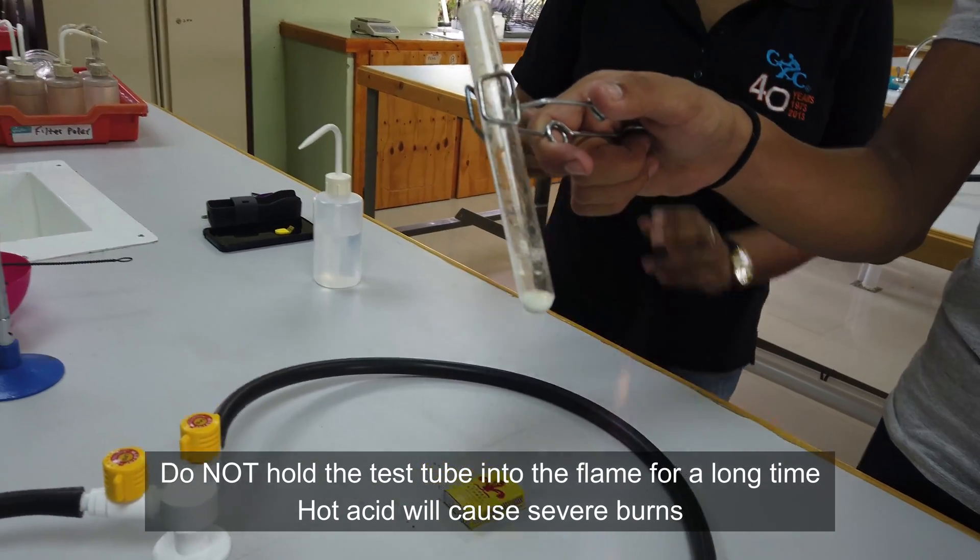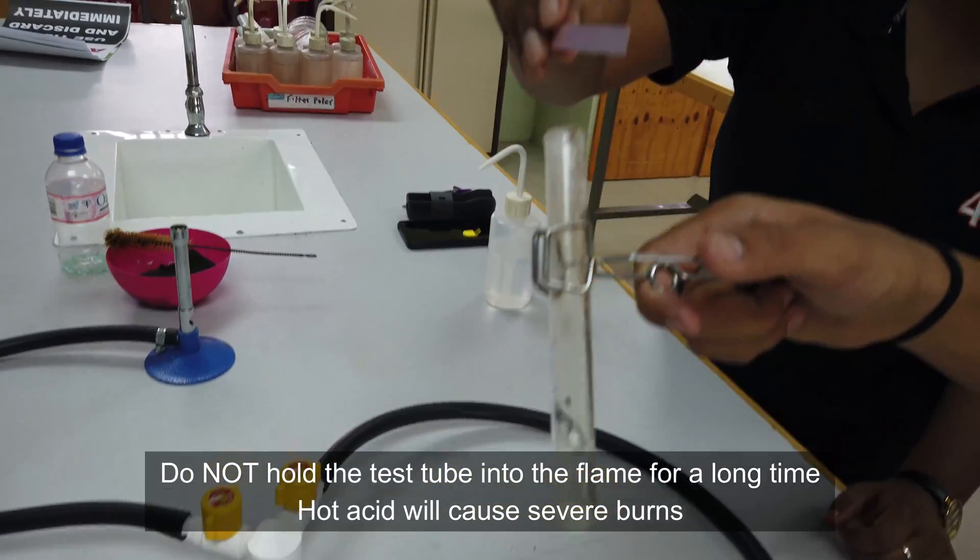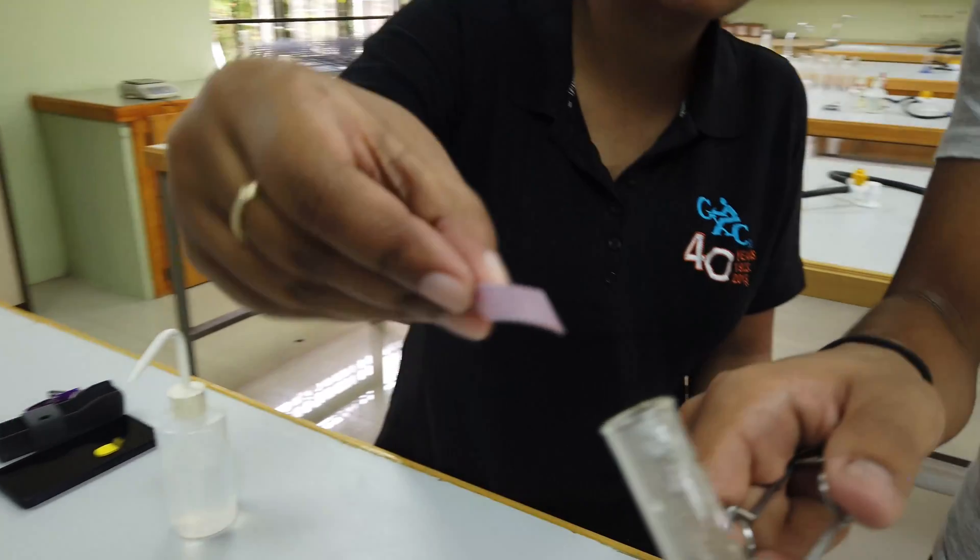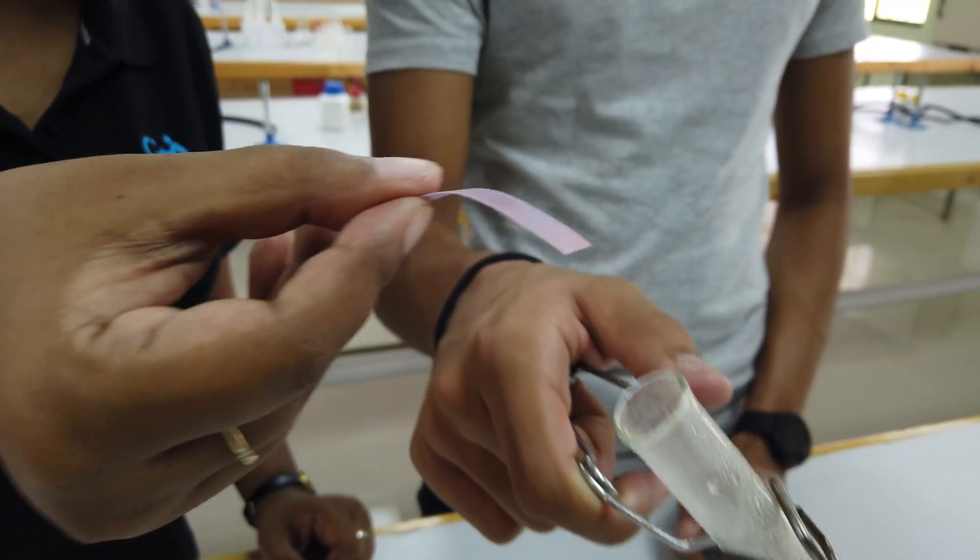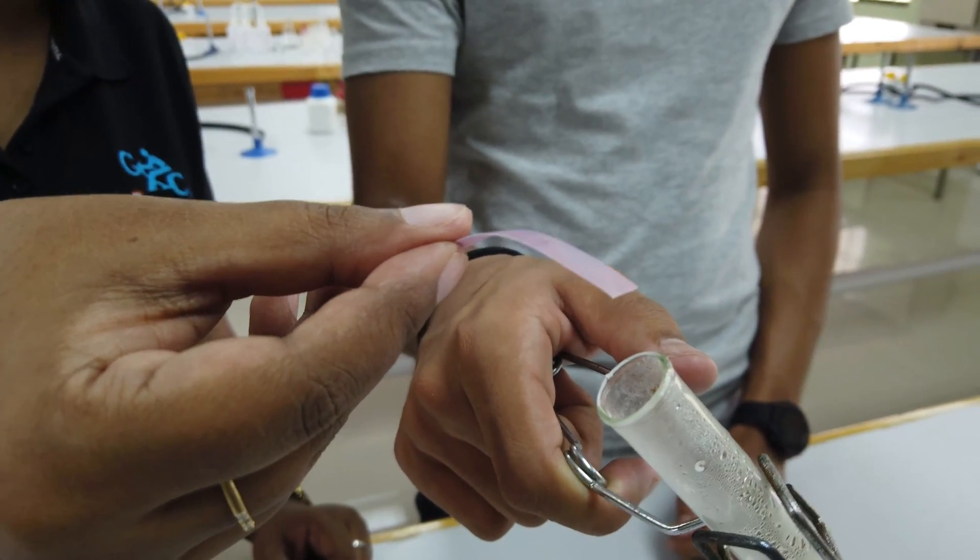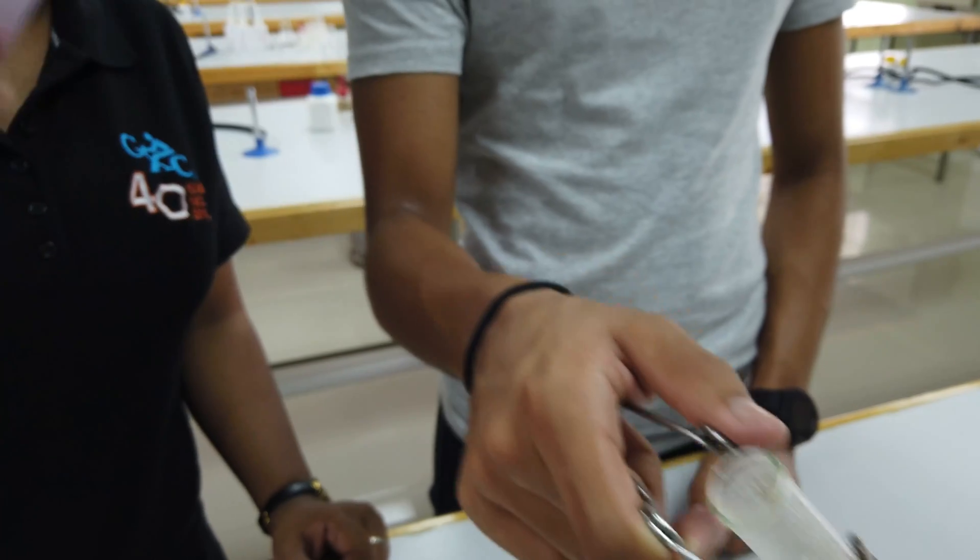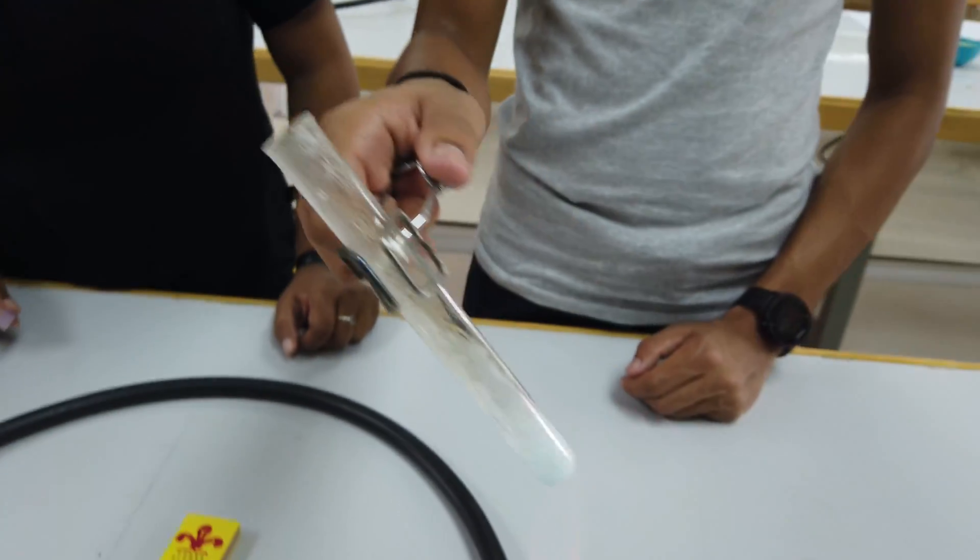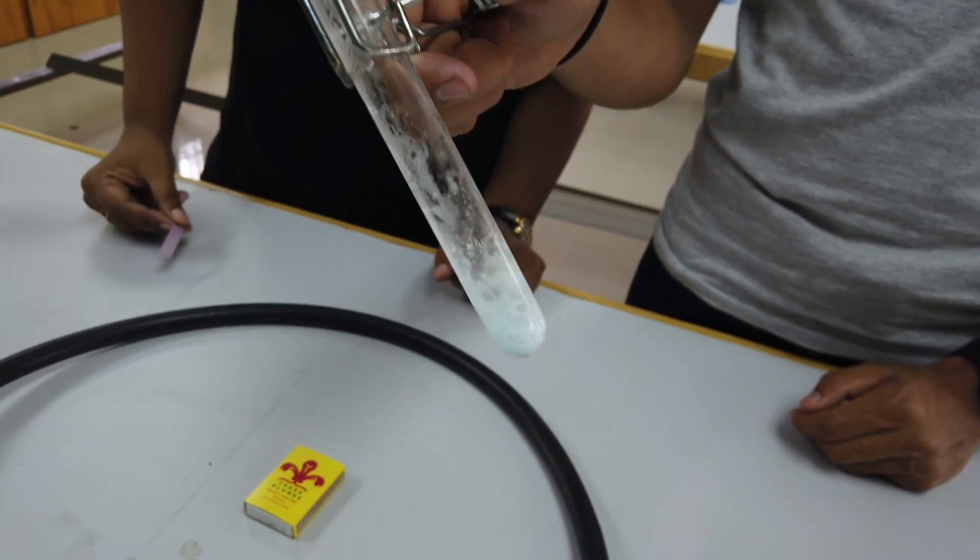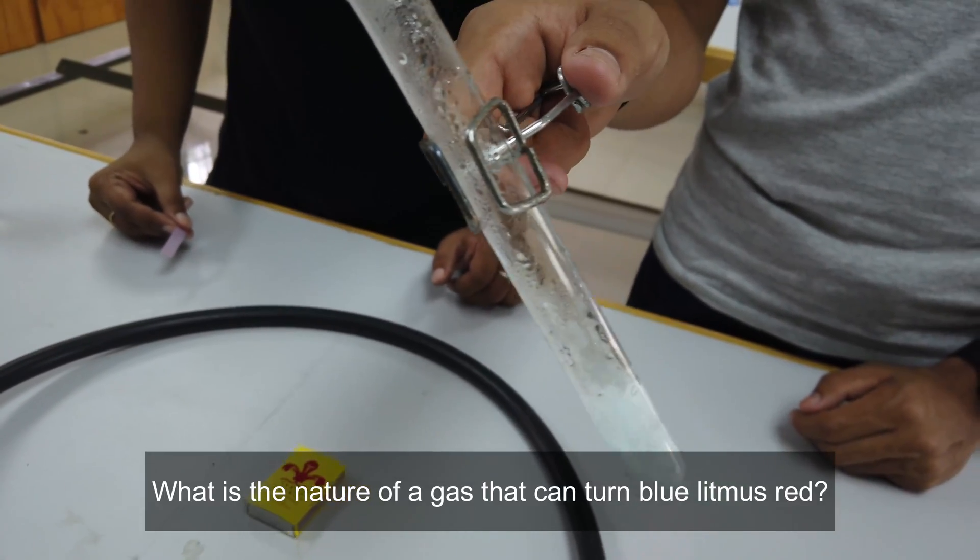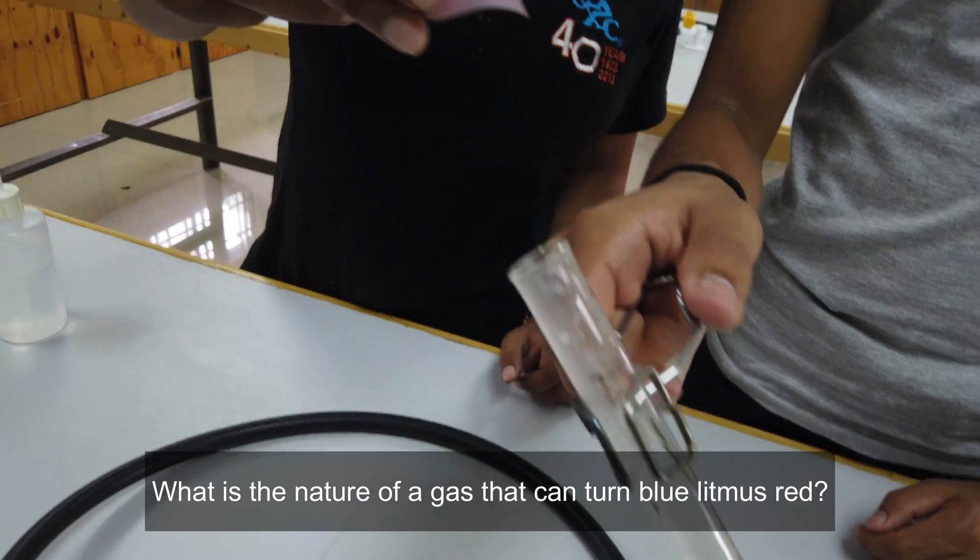What we're going to do is test this gas here with some blue litmus, and notice my blue litmus is already starting to turn pink. All red. What does that say about the gas that's coming off? You have to tell me now.